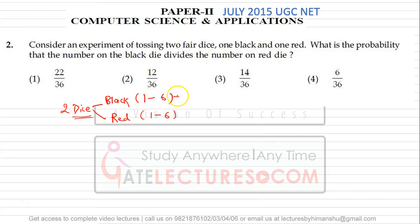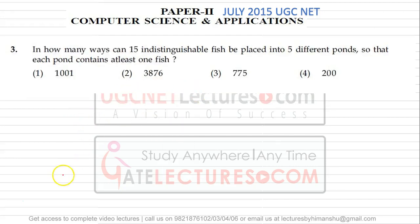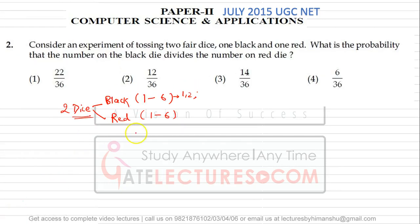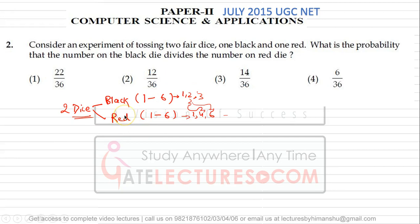So on the black die the number should be like, say, one, two, three. And the number on the red die can be one, four, six, like this. The number on the black die should divide the number on the red die. In how many ways can we do this?